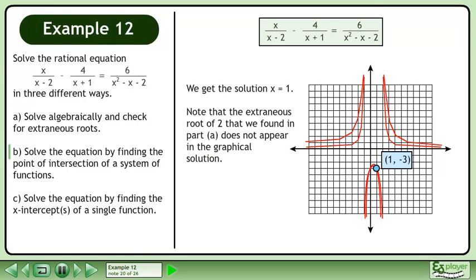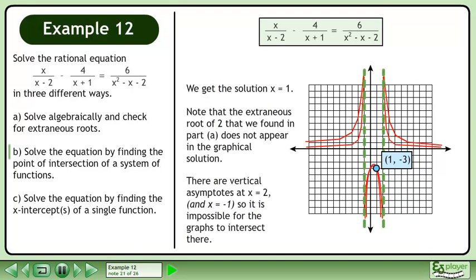We get the solution x equals 1. Note that the extraneous root of 2 that we found in part A does not appear in the graphical solution. There are vertical asymptotes at x equals 2 and x equals negative 1, so it is impossible for the graphs to intersect there.